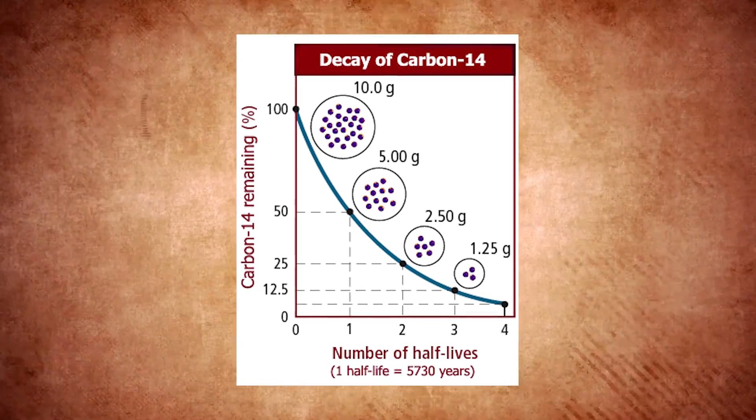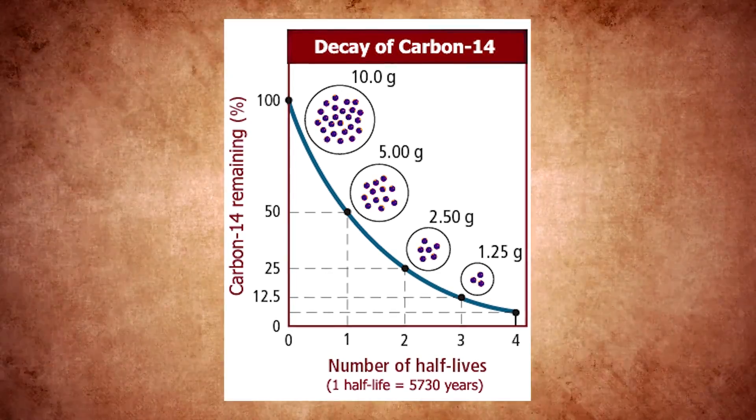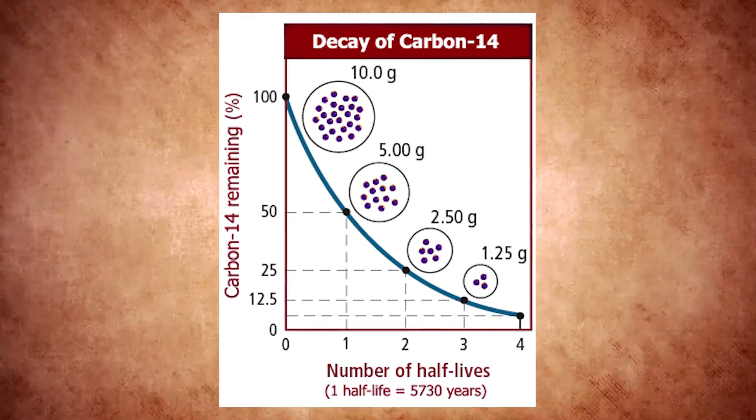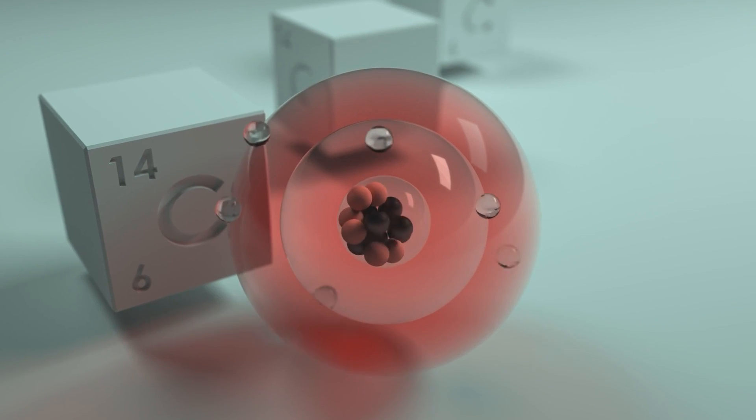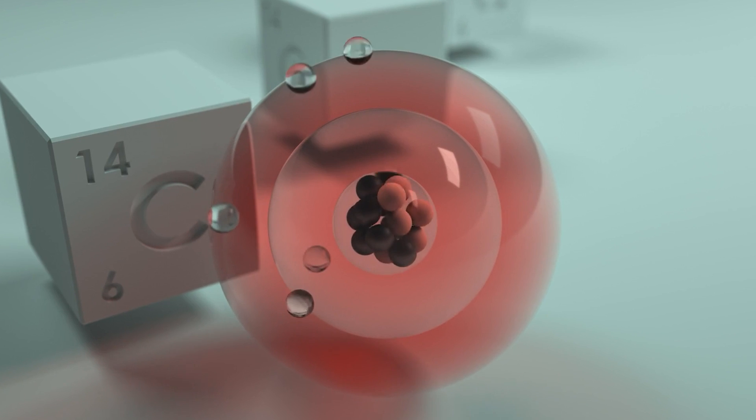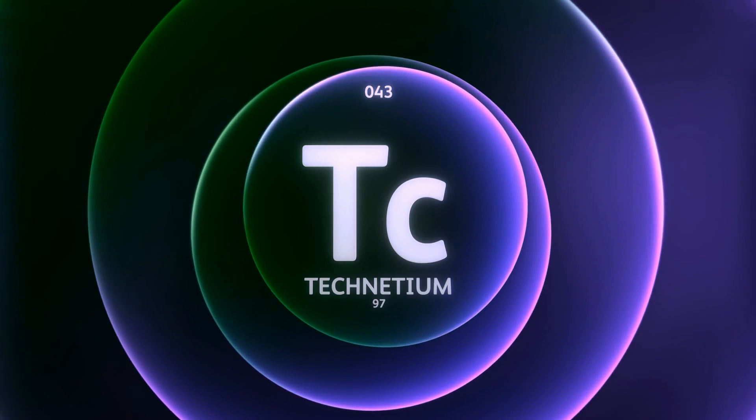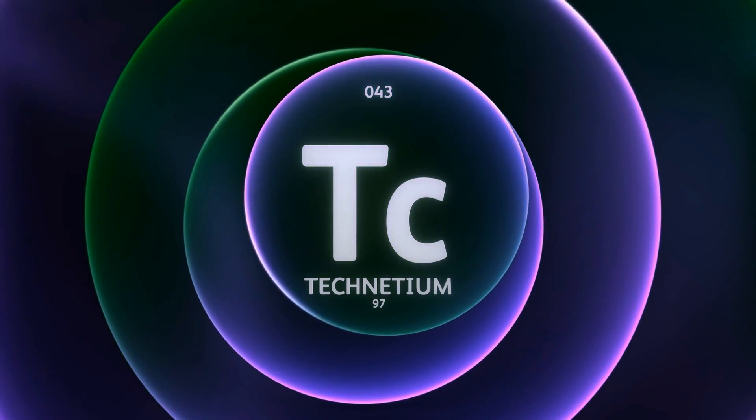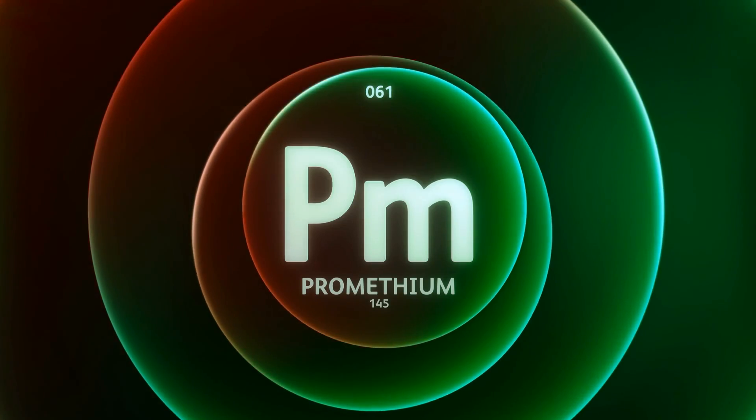Carbon-14 has a half-life of about 5,700 years, and we find it in nature because cosmic rays in the atmosphere create it when they hit nitrogen nuclei. We refer to carbon-14 as an unstable isotope of carbon. Every element has unstable isotopes, and some elements only have unstable isotopes. For instance, any element with more than 83 protons, as well as unusual cases like technetium and element-61, promethium.